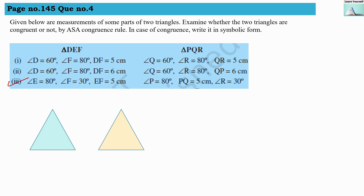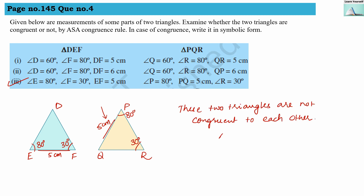Third sub-part: triangle DEF with angle E = 80°, angle F = 30°, EF = 5 cm; and triangle PQR with angle P = 80°, PQ = 5 cm, angle R = 30°. Here side PQ is not included between the two angles P and R. So these two triangles are not congruent — triangle DEF is not congruent to triangle PQR.